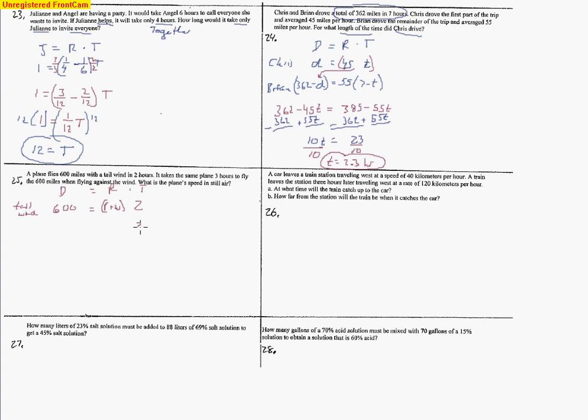It takes the same plane three hours to fly 600 miles, and this is against the wind. Notice against means you're going to subtract the wind speed from the rate of the plane. I'm going to take this equation and multiply it by a half. That will cancel out these twos, so this gives me 300 equals R plus W. Do the same thing with this equation - divide by three or multiply by a third. That cancels the threes, leaving us with R minus W. Then three goes into six two times, so you get 200.